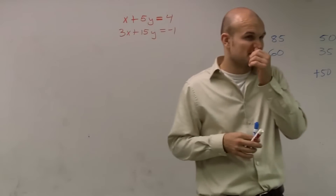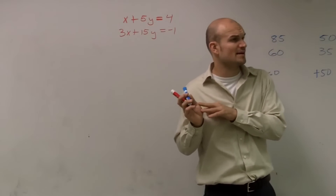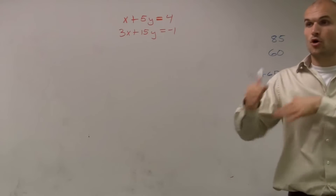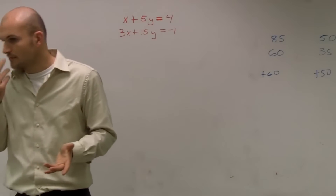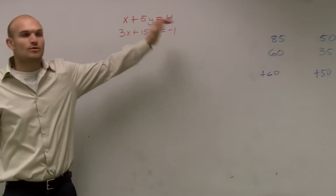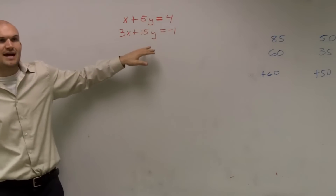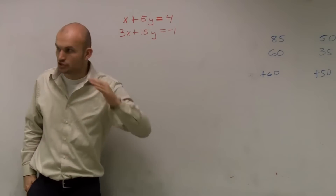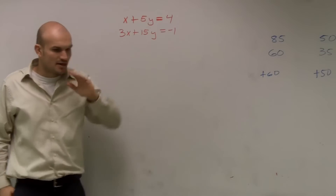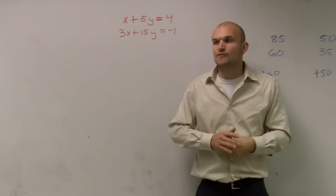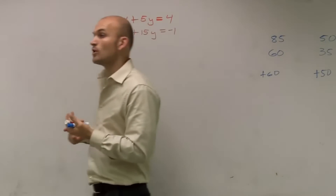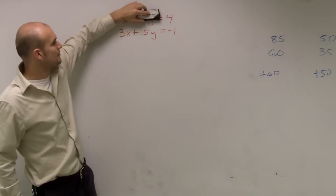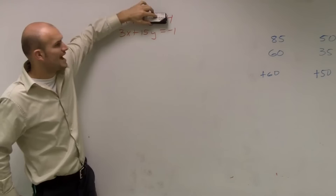So for this next problem, I want to solve by substitution. Remember, I'm going to have to isolate a variable — I need to know what one of my variables equals. If we look at this problem, do we have x equals or y equals anywhere? No. So what we need to do is manipulate one of the equations so that x equals something or y equals something. Let's forget about the top equation for now and look at the bottom: 3x minus 5y equals negative 1.